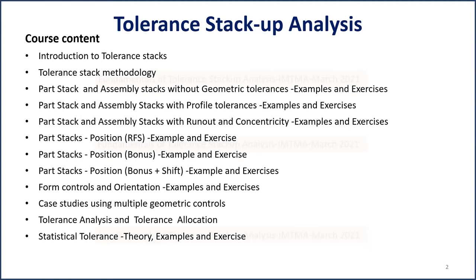Most of us are familiar with part and assembly stacks, so we will do one or two examples without geometric tolerances. Then we will start introducing geometric characteristics one by one — starting with profile, then runout, and concentricity. These are quite straightforward. We start with profile because it is easy for tolerance stack-up analysts to work with profile tolerances. After profile, runout, and concentricity, we will work on position tolerances. Most drawings will have position — either regardless of feature size (no material modifier), or with a bonus tolerance in a clearance fit situation.